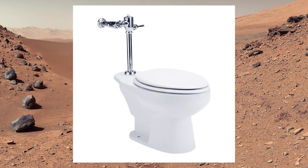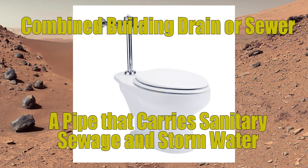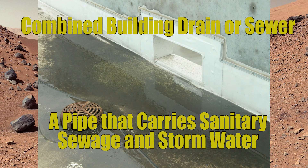A combined building drain is simply a drain that will carry sanitary sewage — the stuff that you would flush down a toilet — and mixes it with storm water, or water that we get off the roof of a building.